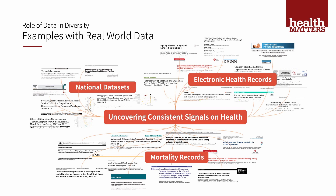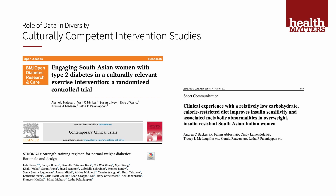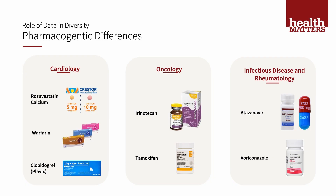Using all of these methods, we've been able to uncover consistent signals on health in Asian Americans. We're moving towards solutions with culturally competent intervention studies in diet, exercise, and drugs for specific Asian subgroups. We've done important work in pharmacogenetic differences, uncovering prescribing differences necessary for Asian Americans in cardiology drugs, cancer drugs, and infectious disease and rheumatology drugs.